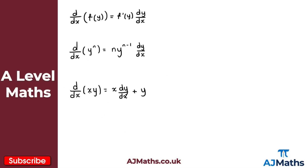I'll quickly demonstrate how this works using the product rule. We split x times y as a product: u equals x and v equals y. Differentiating with respect to x, u prime equals 1. For v prime, using implicit differentiation, if I differentiate y with respect to x that gives me 1, times dy by dx, so simply dy by dx.